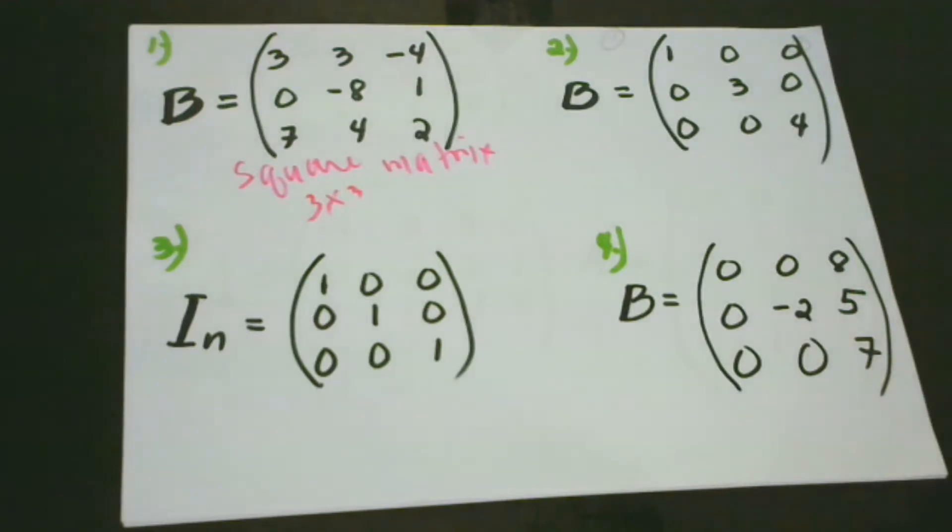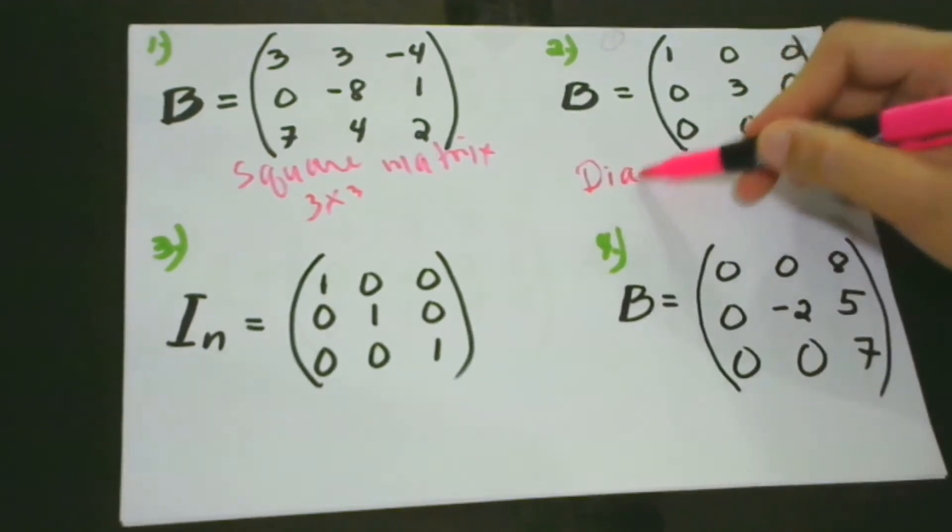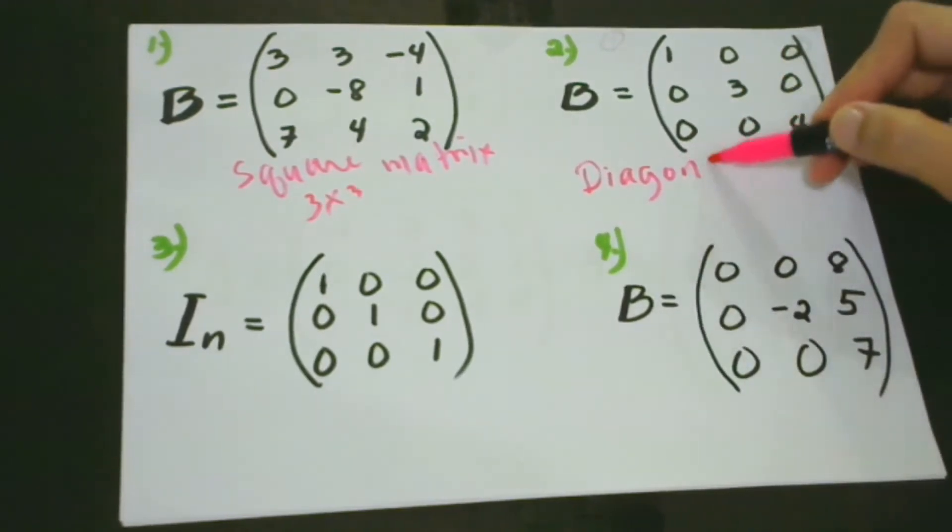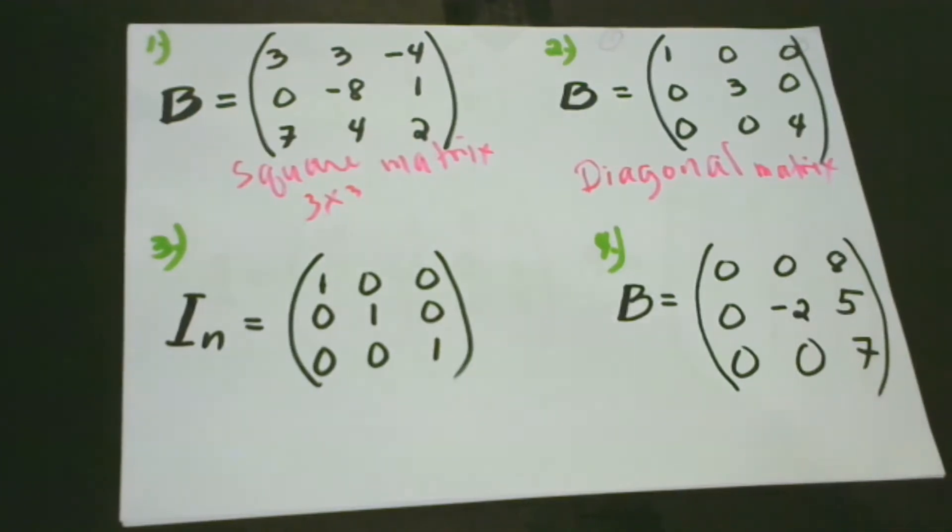Let's go to number 2. Number 2 matrix is what we call the diagonal matrix. When we say a diagonal matrix, it is called a diagonal matrix if each of its non-diagonal element is 0.